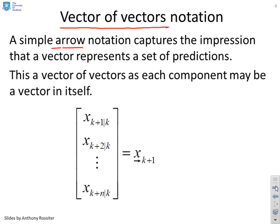What we're going to do is use a simple arrow notation in order to represent these vectors of vectors. Now the reason we use arrows is because they represent direction in some sense, and so an arrow pointing to the right is going to represent we're moving forwards in time, we're going future.